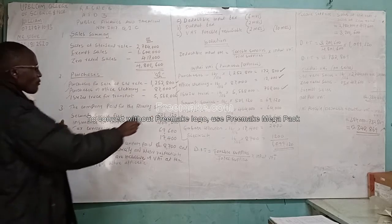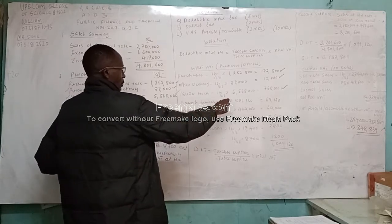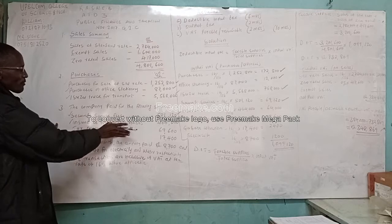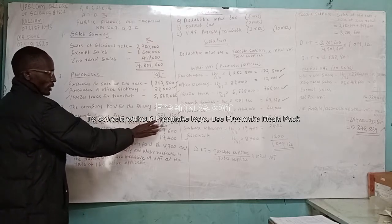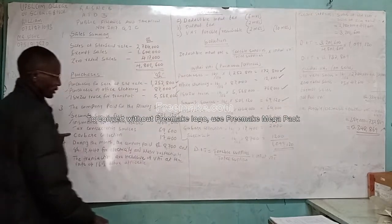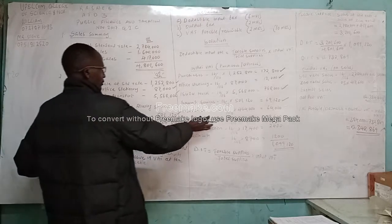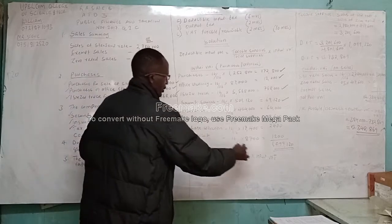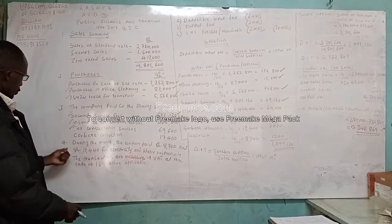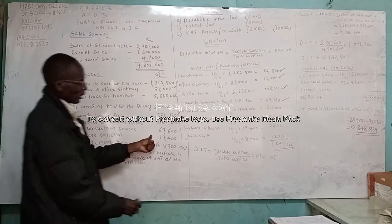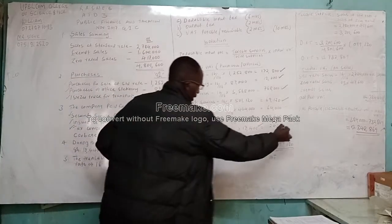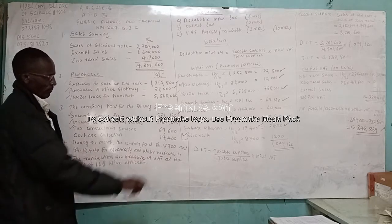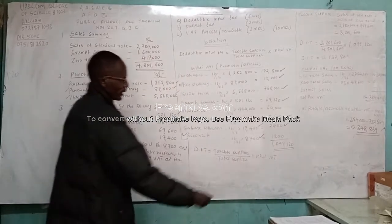Security services: 16 over 116 times 501,120, the answer is 69,120. We move to insurance for company vehicles — gross amount 464,000, multiply by 16 over 116, you get 64,000. Then tax consultancy fees: 69,600 times 16 over 116, we get 9,600. There was also garbage collection: 17,400 times 16 over 116, you get 2,400 shillings. There was electricity — electricity has VAT. They paid 8,700 times 16 over 116, we get 1,200.